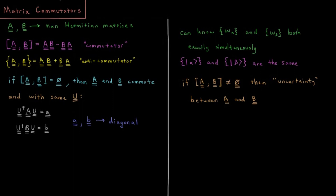which is the diagonal representation of B. So this means that with the same unitary matrix, the unitary transformation diagonalizes A and B.